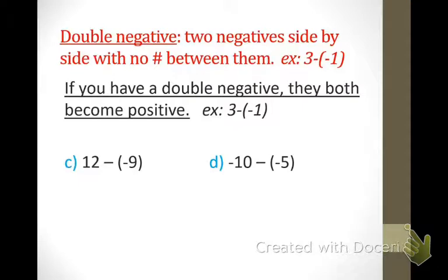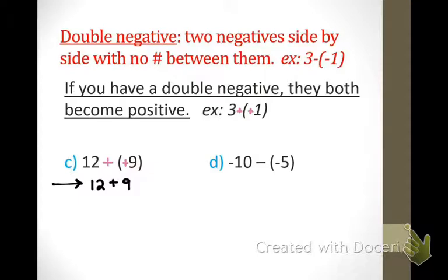When there's two negatives side by side, you can switch them — automatically turn them into positives instead of negatives. So let's look at our first example: 12 minus negative 9. Do you see that I have a double negative? Two negatives side by side with no number in between them — so they both become a positive. I want you to rewrite it: instead of 12 plus plus 9, it just means 12 plus 9. What's 12 plus 9? 21. So 12 minus negative 9 equals 21.